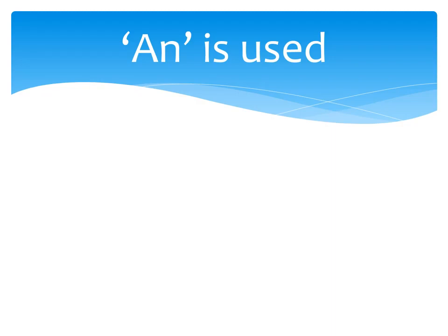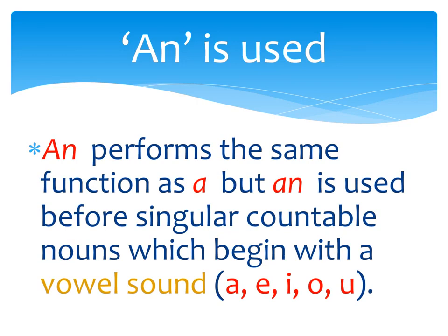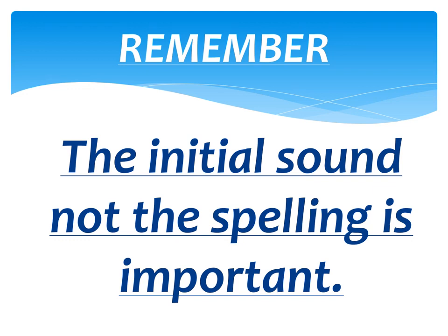Now we are going to revise the uses of An. An performs the same function as A, but An is used before singular countable nouns which begin with a vowel sound — that is, A, E, I, O, U. Remember: it is the sound that matters, not the spelling. If the word is giving a vowel sound, only then we use An; otherwise A. The initial sound is what's important — the letter does not matter.